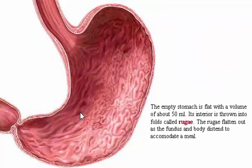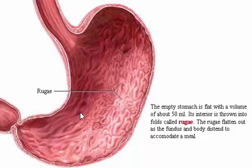The empty stomach is flat, with a volume of about 50 milliliters. Its interior is thrown into folds called rugae. The rugae flatten out as the fundus and body distend to accommodate a meal. The stomach can hold about one liter of food with little change in internal pressure, rising as it distends further to accommodate up to four liters.